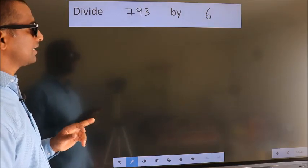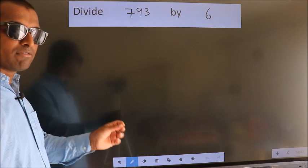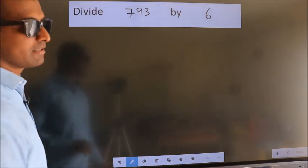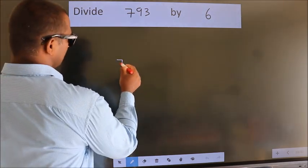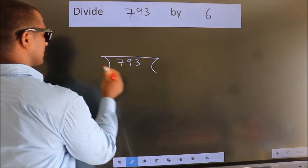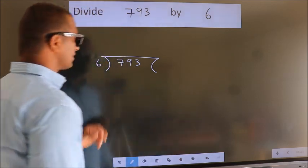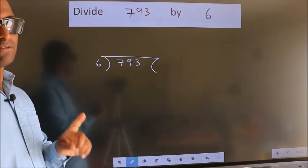Divide 793 by 6. To do this division, we should frame it in this way. 793 here, 6 here. This is your step 1.